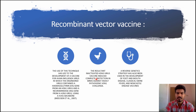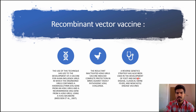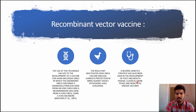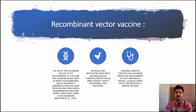This virus can be used as a vector vaccine. Reverse genetics has also been used to prepare vaccines against foot-and-mouth disease, classical swine fever, and Newcastle disease.